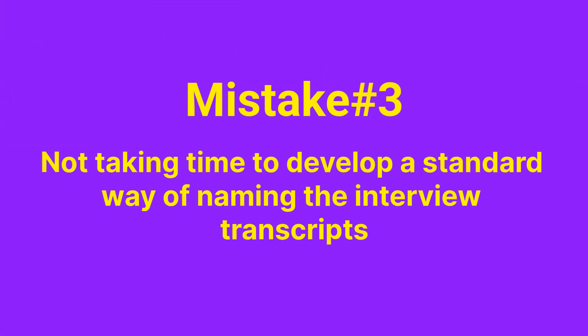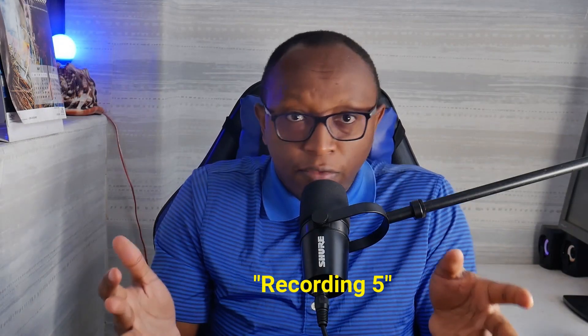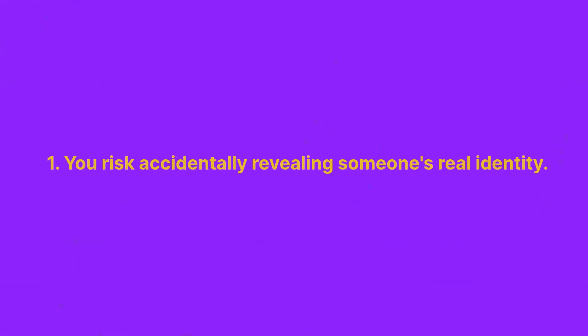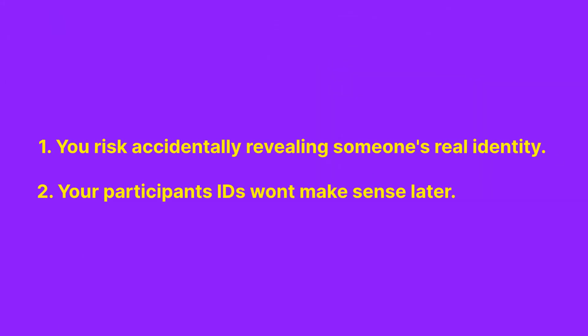Mistake number three: not taking time to develop a standard way of naming interview transcripts. Here is a rookie mistake that can cause big headaches — failing to standardize how you name your participants. If you just leave your files with names like 'Recording 5' or use inconsistent labels, two things happen: you risk accidentally revealing someone's real identity, which will break confidentiality, or your participant IDs won't make sense later, so your analysis and storytelling will get confusing.